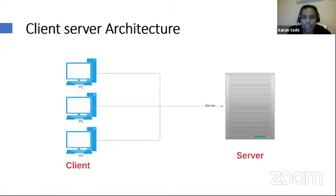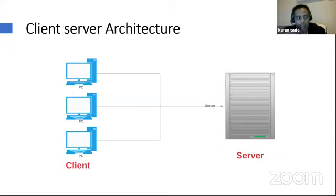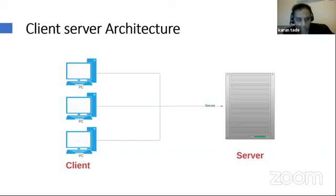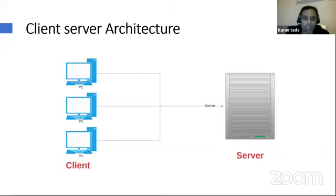Now I'll talk about the client-server architecture. Assume either a PC, mobile phone, or tablet is the client — the browser or the app on any of these devices is the client. When you make a request — for example, doing a Google search to find the nearest theater or a movie list — the request goes to the server, where it's fetched from. All this is happening in a fraction of a second, and that's because of the power of cloud computing and the infrastructure available on the back end.